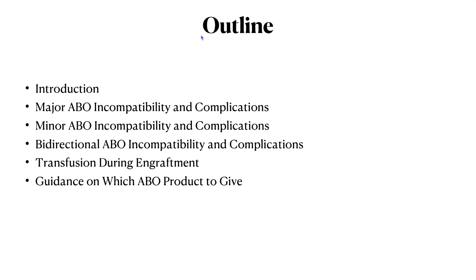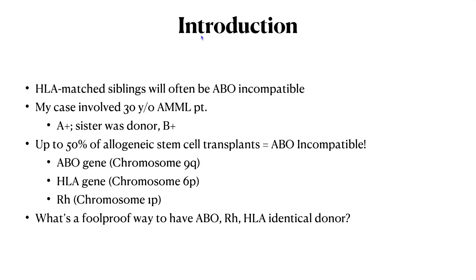We're going to talk about introduction, major ABO incompatibility and complications, minor ABO incompatibility, and bidirectional ABO incompatibility and all the complications. We're going to briefly talk about transfusion during engraftment and guidance on which ABO product to give based on what the recipient and donor blood type is and what phase of the engraftment the patient is in.